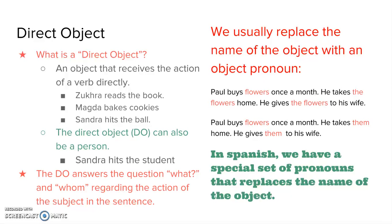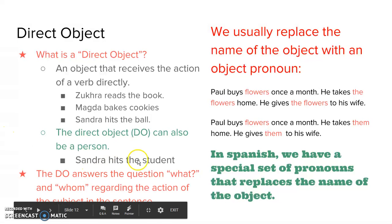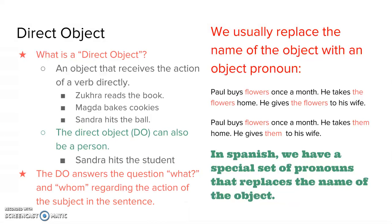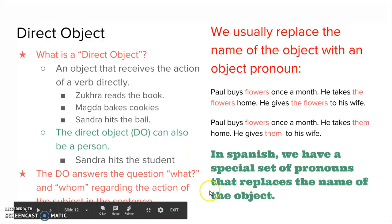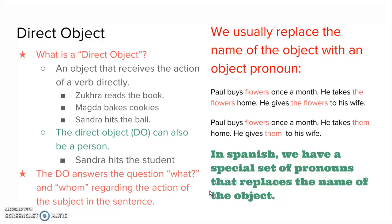Sometimes direct objects can be people or things. For example, Sandra hits the student — the student is the direct object taking the action. The direct object will answer the questions 'what' and 'whom' regarding the action of the subject in the sentence. Think of who gets affected by this.